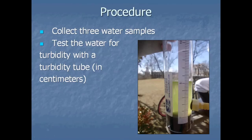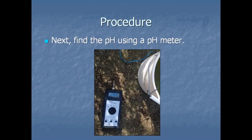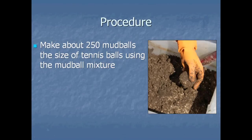For the procedure, we collected three water samples at each station in the pond and tested the turbidity with the turbidity tube and the pH with the pH meter. We made about 250 mud balls using the mud ball mixture.